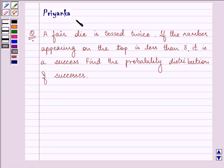Hi and how are you all today? My name is Priyanka and let us discuss this question. It says, a fair die is tossed twice. If the number appearing on the top is less than 3, it is a success. Find the probability distribution of success.